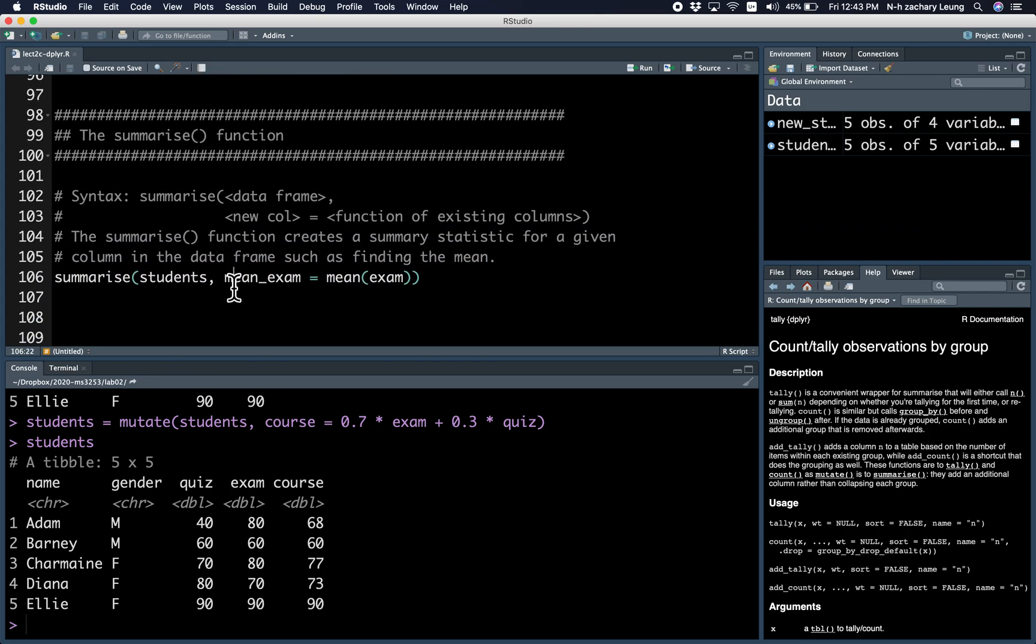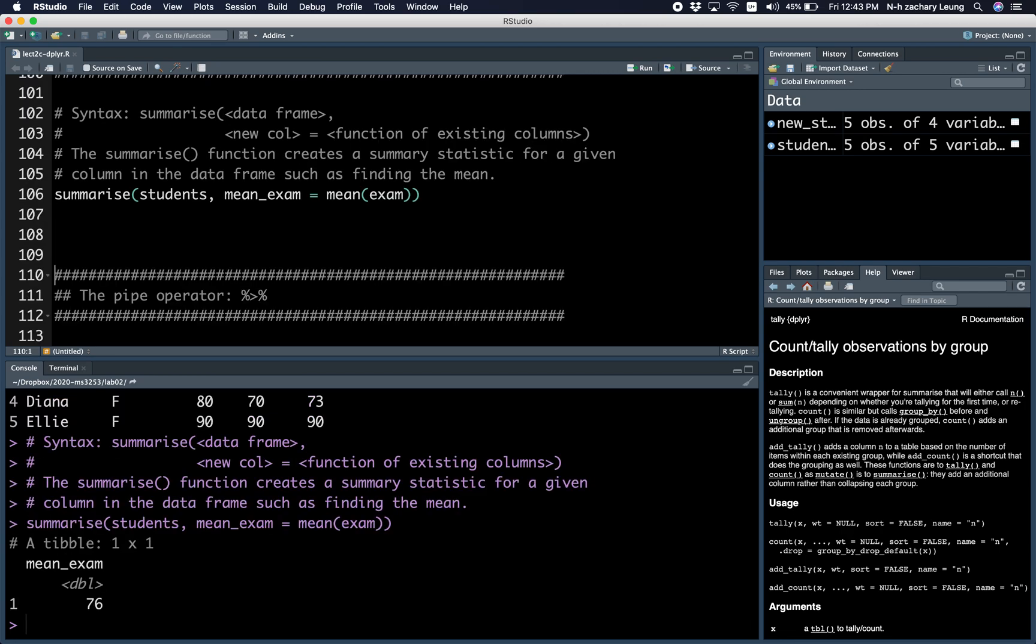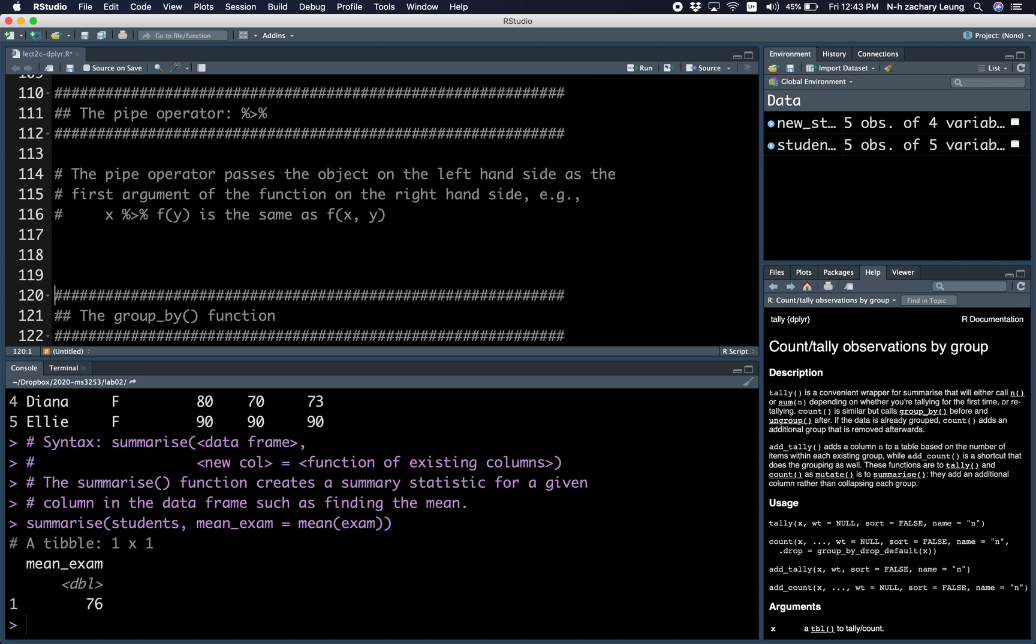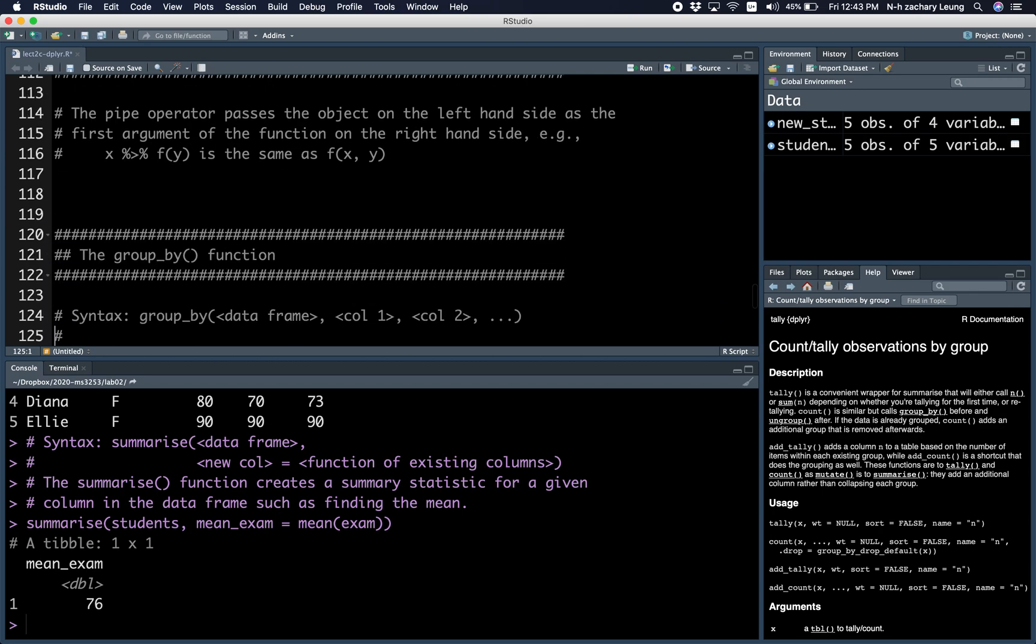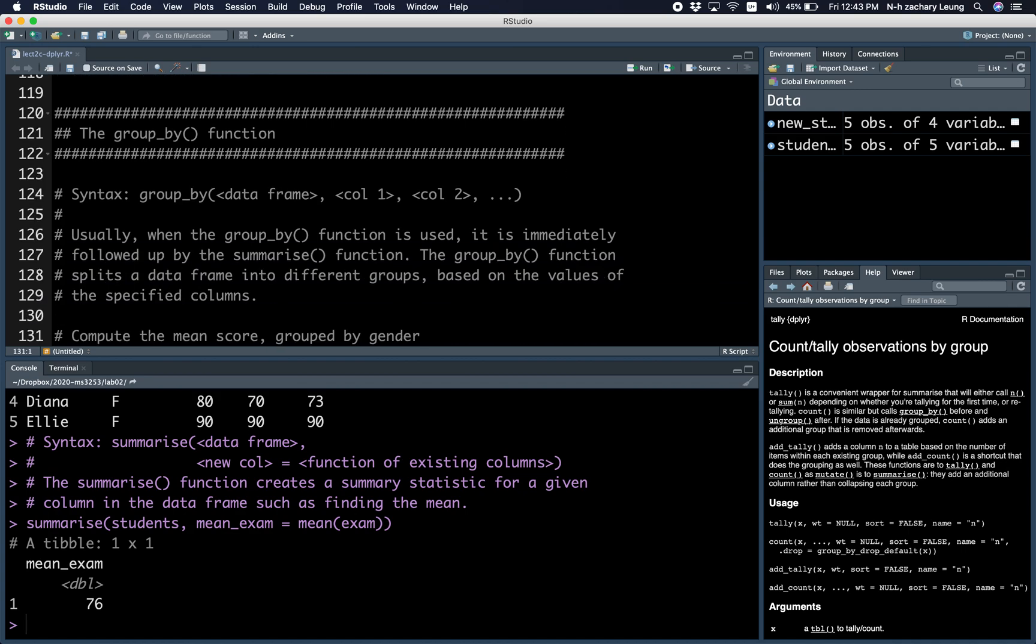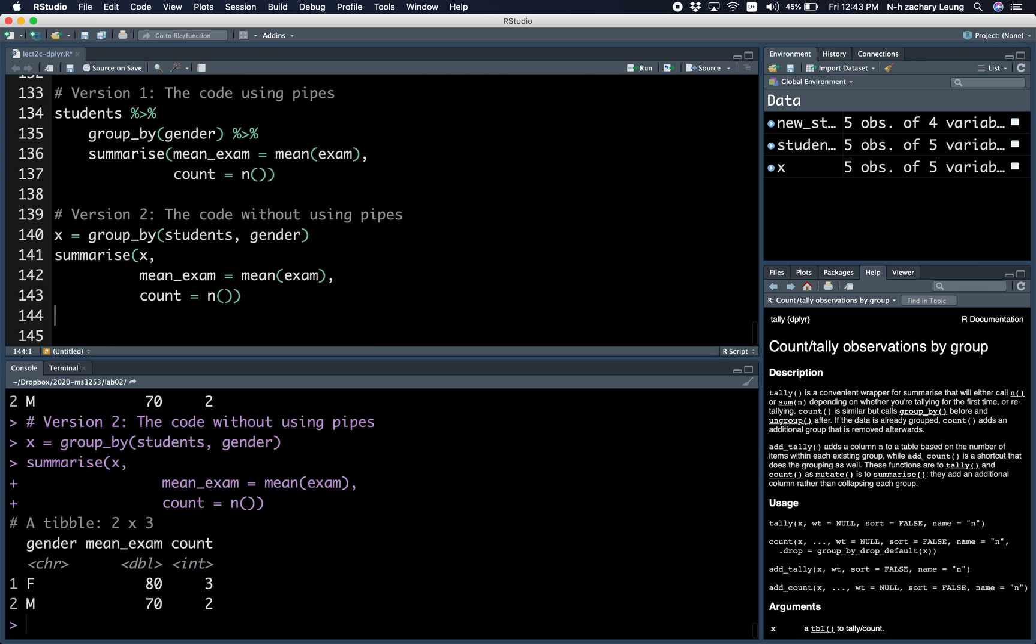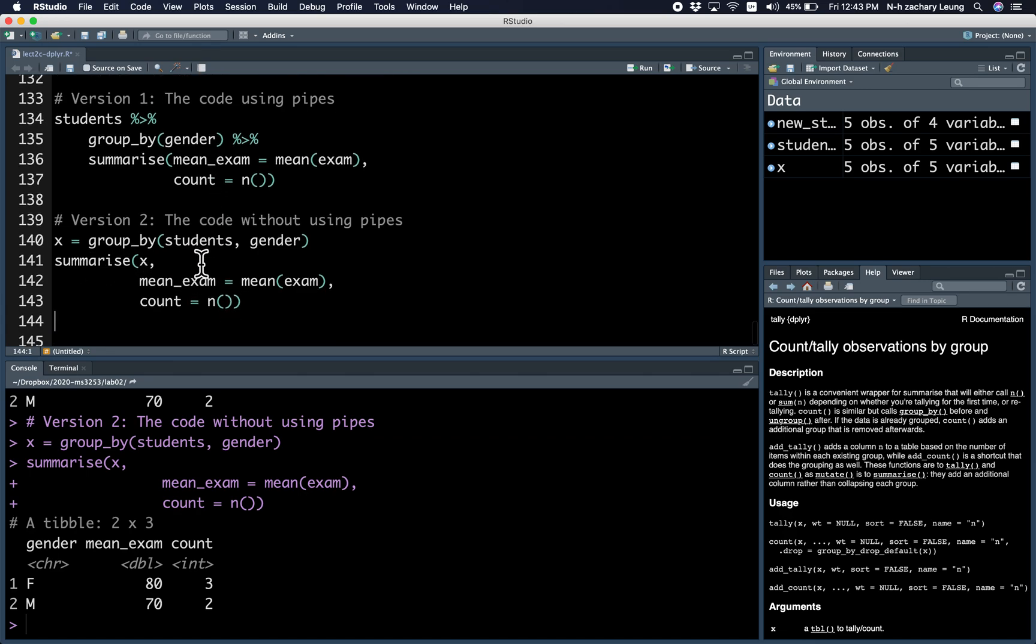Let's now summarize to compute the mean score. And the pipe operator, there's some brief notes there. Let's run the group_by. If you group by gender and then you compute the summaries for each group, this is what you get. You can get the same result using the intermediate variable X, but it becomes two statements instead of one. I definitely prefer the version using pipes.